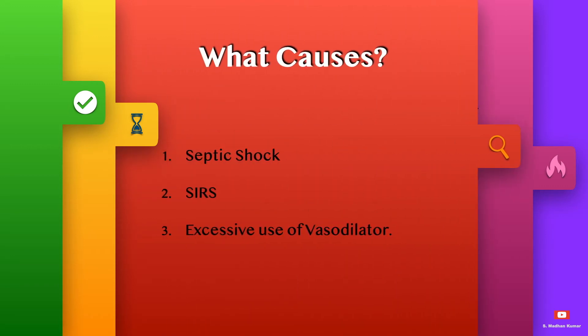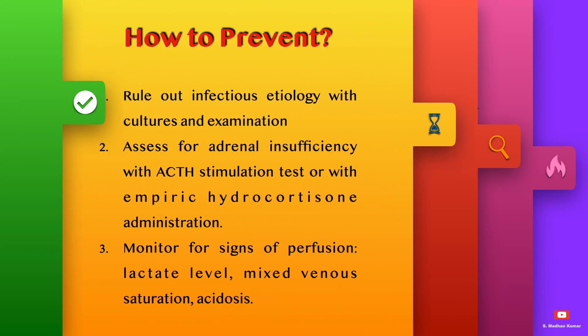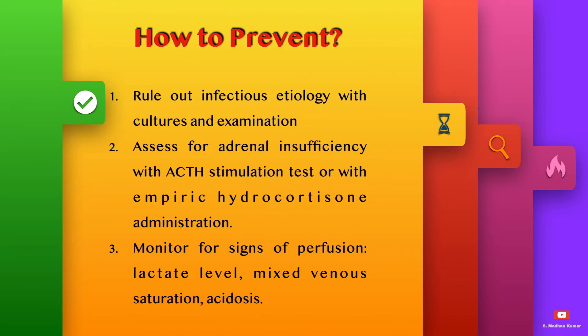Vasoplegia can be caused by septic shock, SIRS, and excessive use of vasodilators. It can be prevented by ruling out infectious etiology with cultures and examinations, assessing for adrenal insufficiency with ACTH stimulation test, or with empiric hydrocortisone administration.